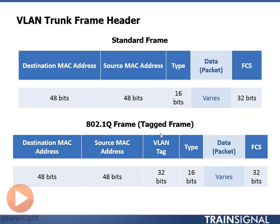A tagged frame, on the other hand, will add in this VLAN tag. So we go destination MAC address, source MAC address, then VLAN tag information. That VLAN tag is there so that we can put in the VLAN identifier for that particular frame. This piece is actually added into the frame — the frame is not reconstructed. We stick the VLAN tag in without rebuilding the whole frame.